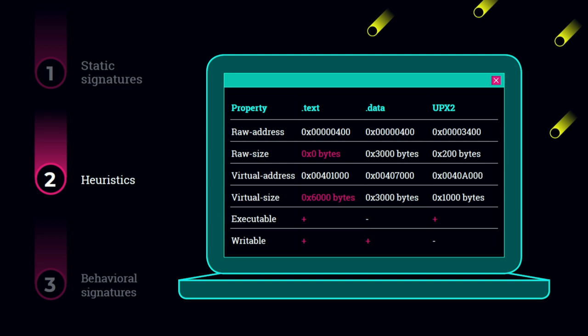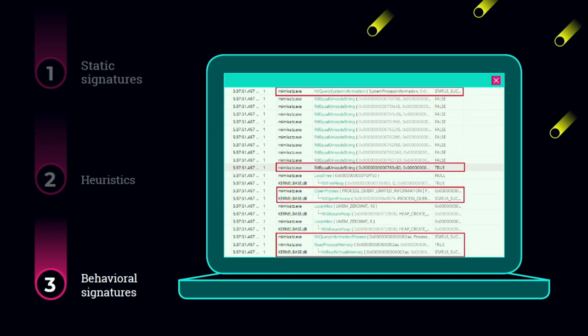On the other hand, if we have a digitally signed file on the file system that imports API functions that interact with the user, we may assume that file is innocent because it has many innocent features. Over the years we know that malicious files actually penetrated the static signatures and heuristic rules — and that's what behavioral signatures came to solve.